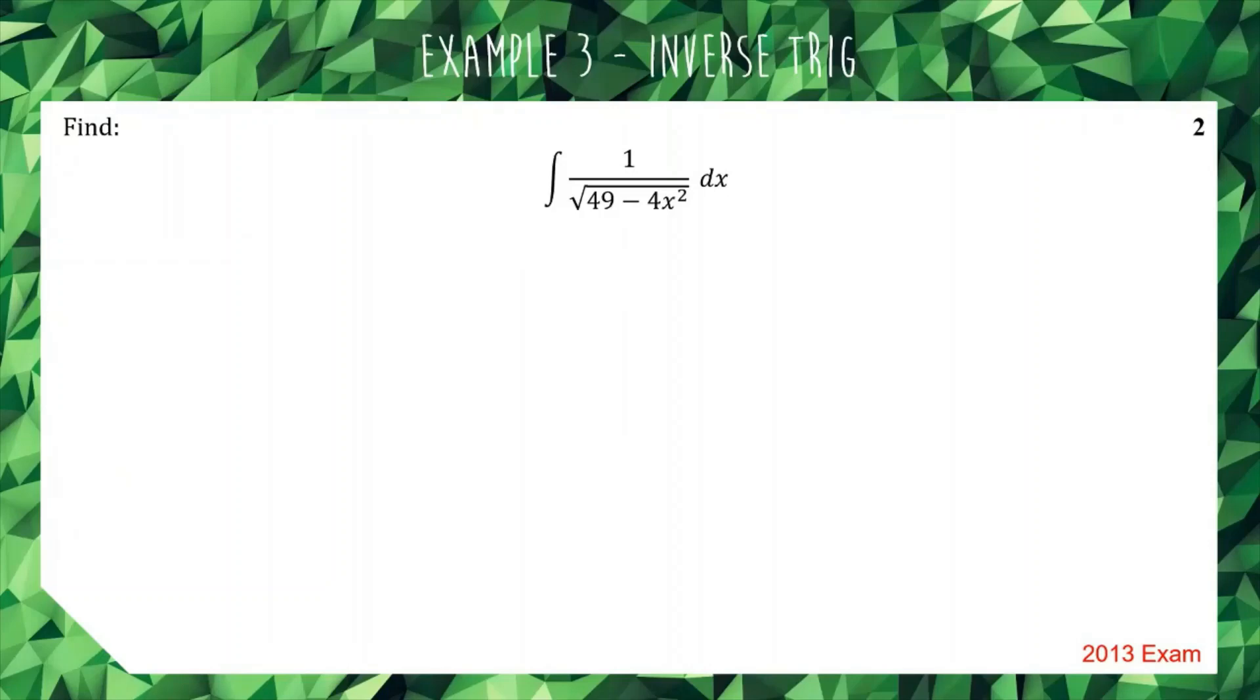We're going to kick off with this example from the 2013 Extension 1 exam. It's a 2-mark question: the integral of 1 over the square root of 49 minus 4x squared. As always, pause the video and have a go if you want, or if you're not sure where to start, just watch and learn.